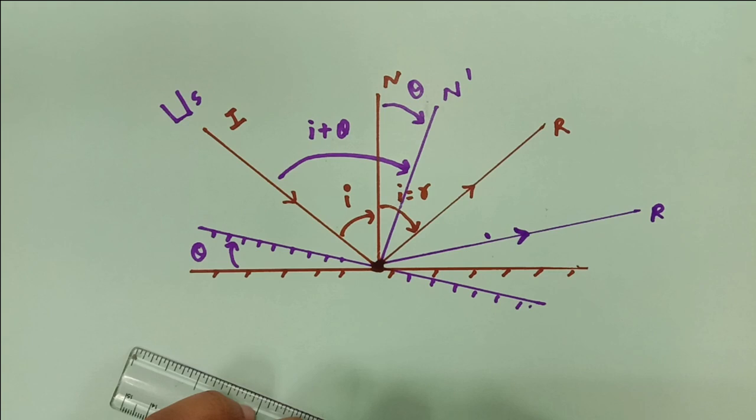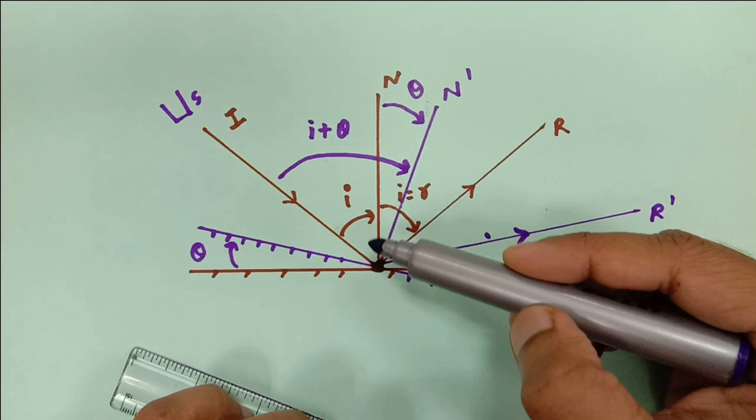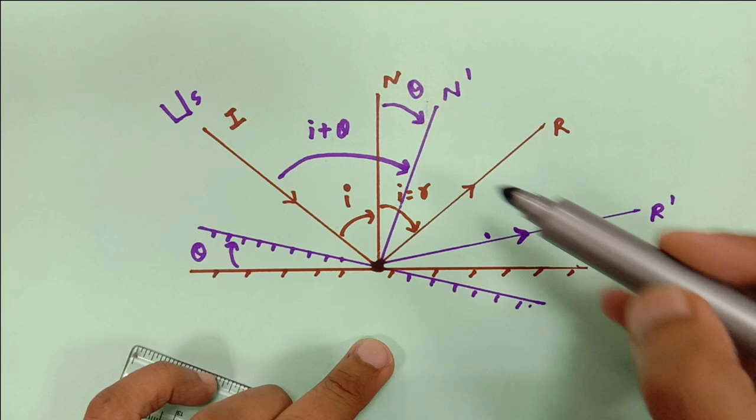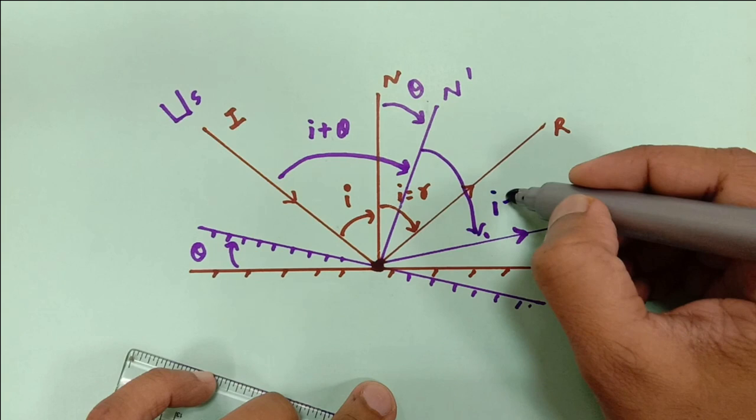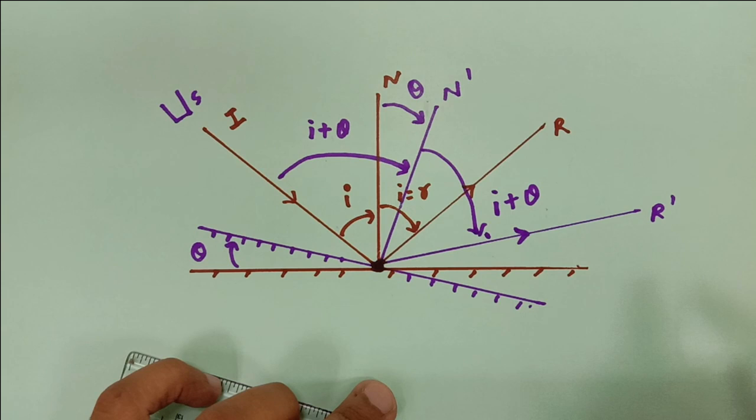This is my new reflected ray — I'll call it R-dash. The incident ray makes I plus theta with respect to the new normal, so the reflected ray must also make the same angle, I plus theta.